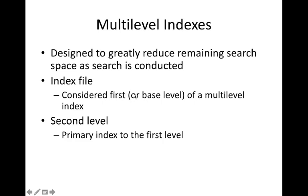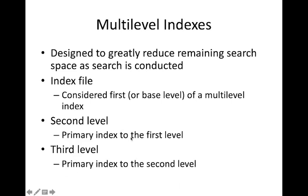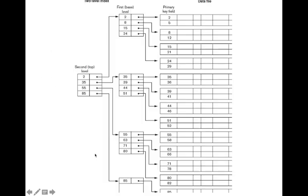When the index file grows to one million entries, binary search becomes difficult. Instead, we provide a second level that indexes the first level, and optionally a third level that indexes the second level. The bottom index file contains the actual data pointers. Adding levels reduces the search space.